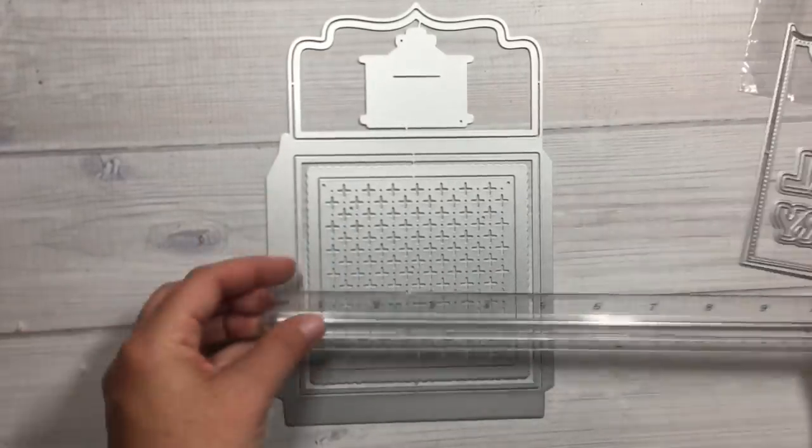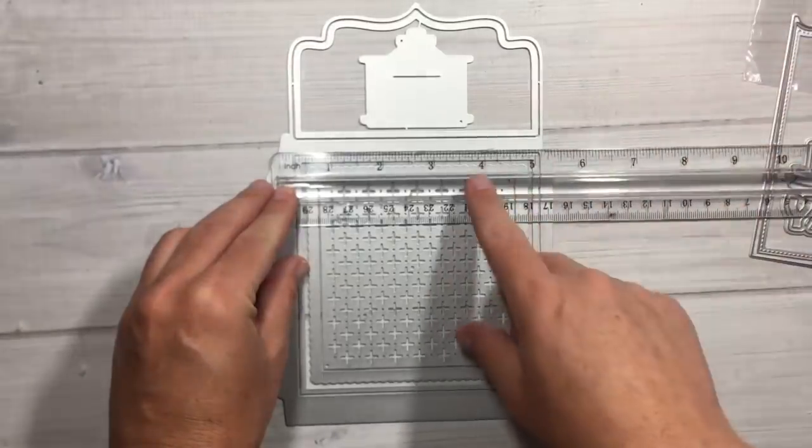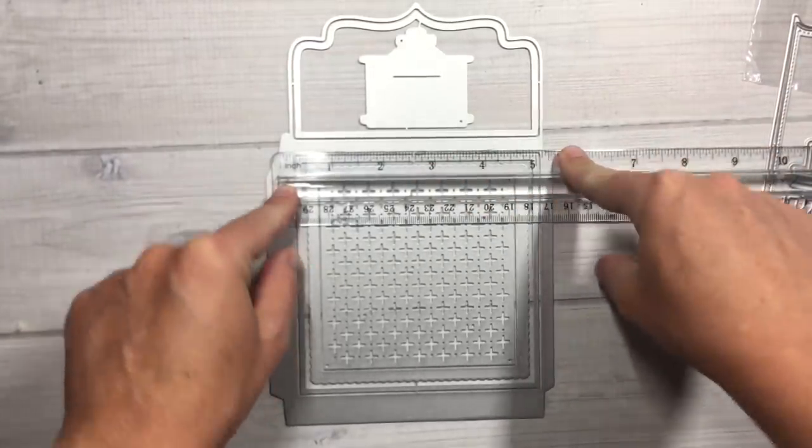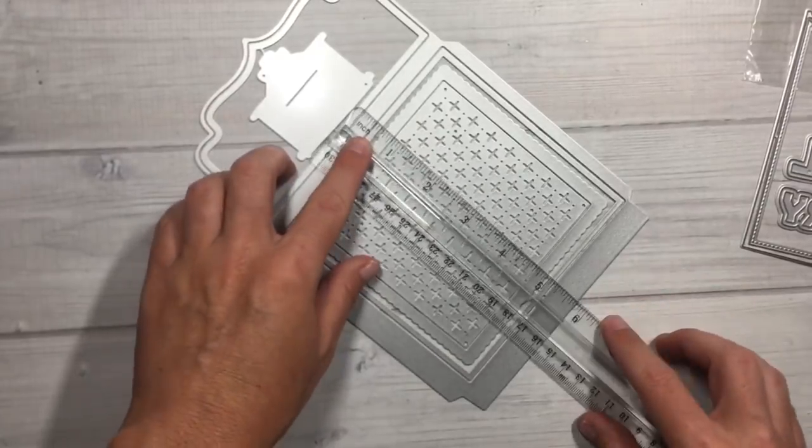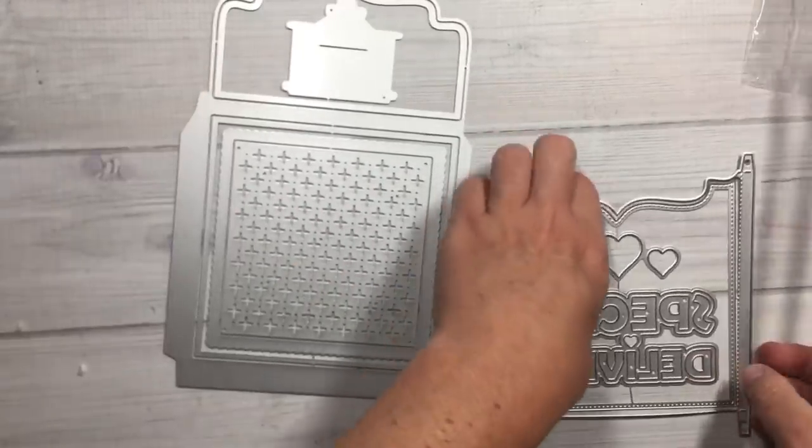Let's see, so the actual die when it's assembled is a hair over five inches wide and probably like five and a half inches tall, and then this little layering piece that goes on top of it, super cute.